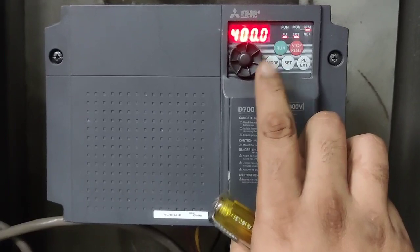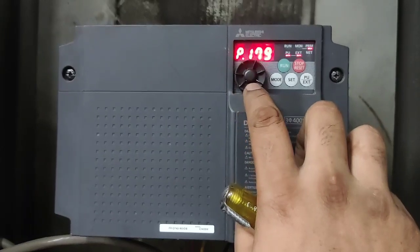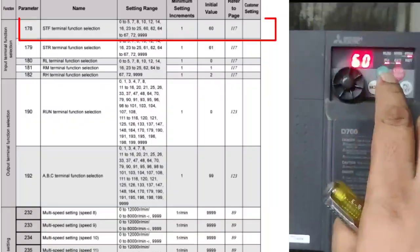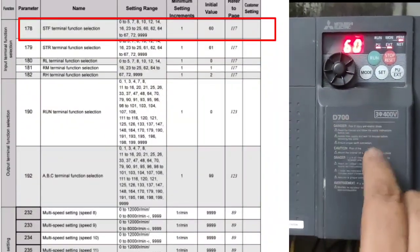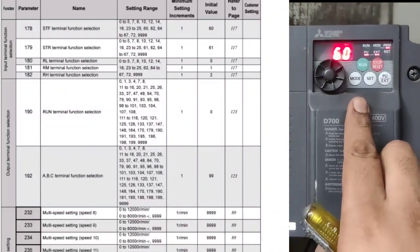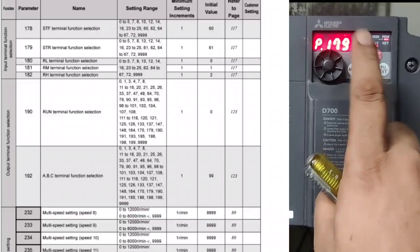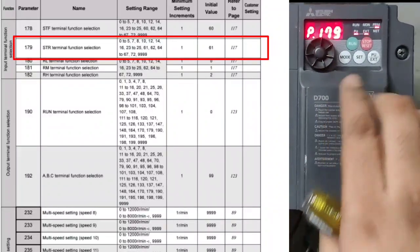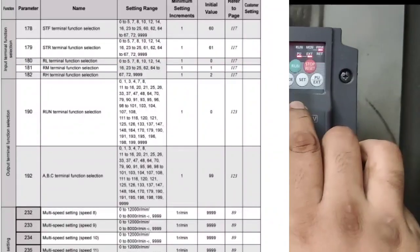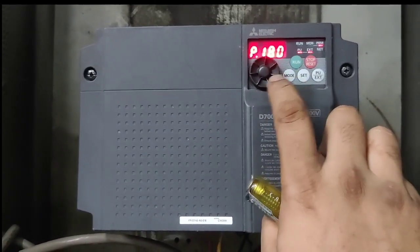For digital input selection: parameter 178 is for the STF terminal used for forward rotation. To use STF terminal for forward rotation, set 60 in parameter 178. Parameter 179 is for the STR command — if you want to use the STR terminal for reverse rotation, set 61 in parameter 179.